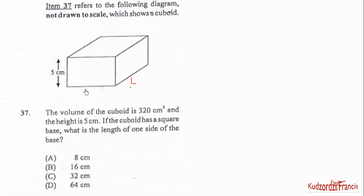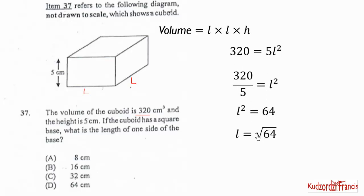So if you have a square base, then all these are equal. So volume will be L times L times h. And we substitute the volume, which is 320. It was given for us. 320 = 5L². L times L is L². Divide both sides by 5 to get L² = 64. Take positive square root to get L = 8 cm.